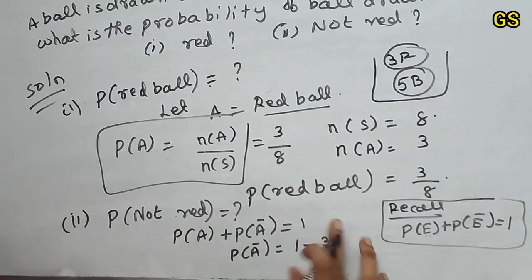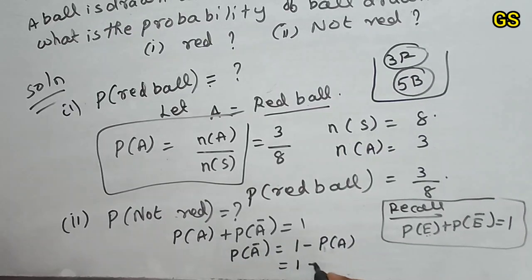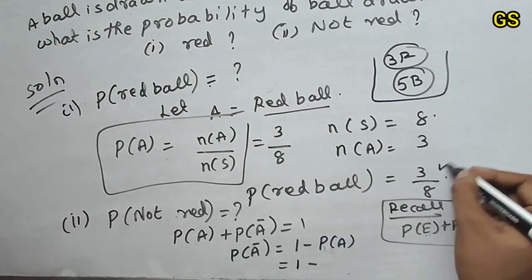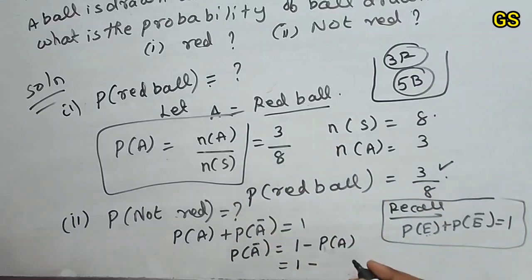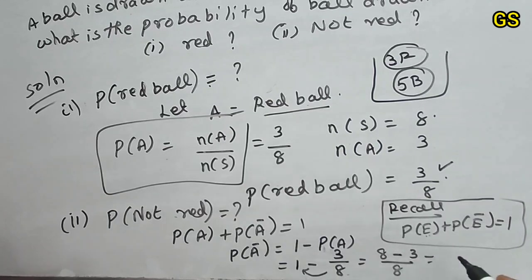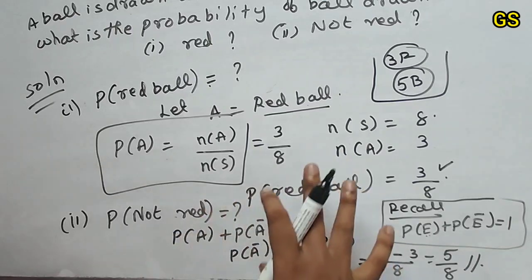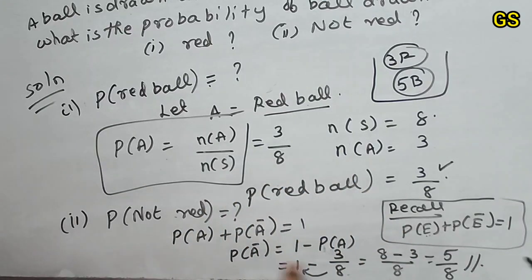P of A bar equals one minus P of A. Substituting three by eight, we get P of A bar equals one minus three by eight, which equals five by eight. So the probability of not red ball is five by eight.